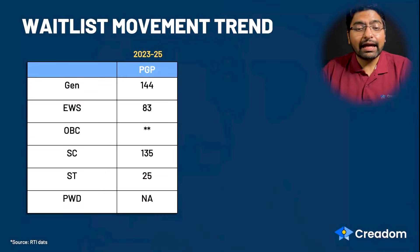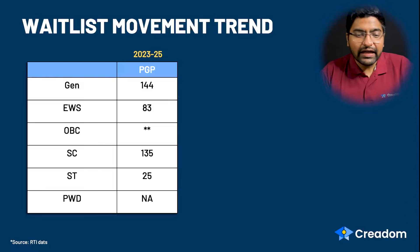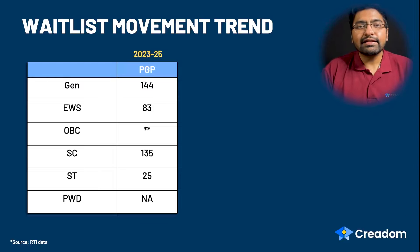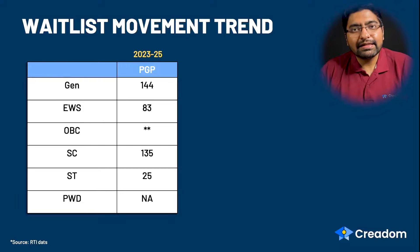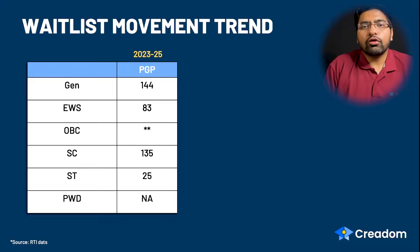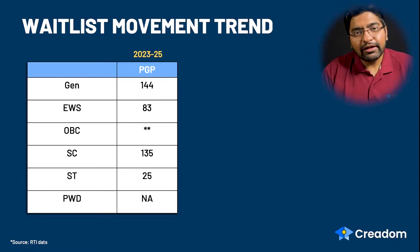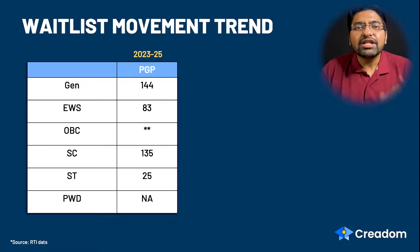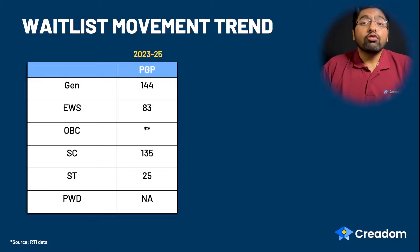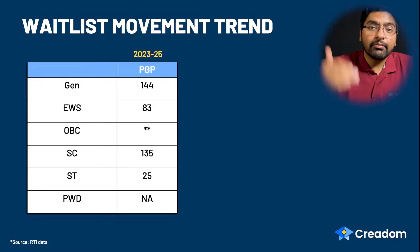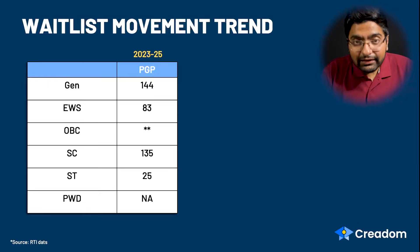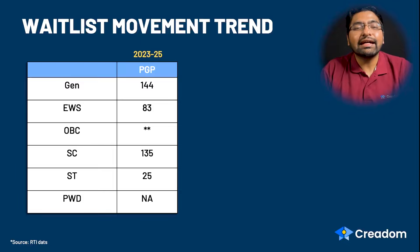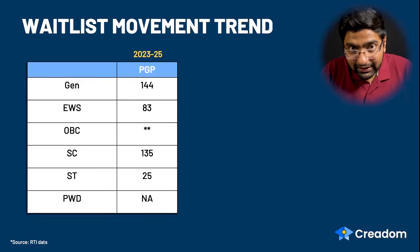Looking at the waitlist movement at IIM Shillong — I was only able to get data for the most recent year, 2023–25. You'll notice there's no OBC data because IIM Shillong does not have OBC reservation. Now, nobody — including me — can speculate based on just one year of data. In my other IIM waitlist movement videos I always provide at least two years of trends, yet even then I never speculate whether you'll get an offer at a specific number. These numbers only give you an idea of what happened last year — the list could move less or more.